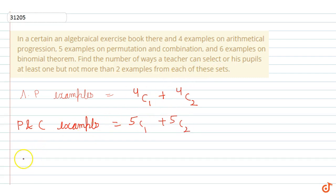Third, we have binomial theorem examples. For binomial theorem there are six examples. Either we can choose one from six or we can choose two from six. So we calculate 4C1 plus 4C2.